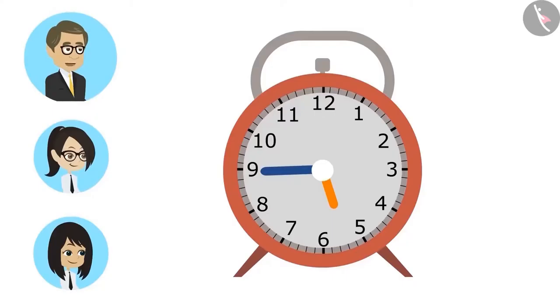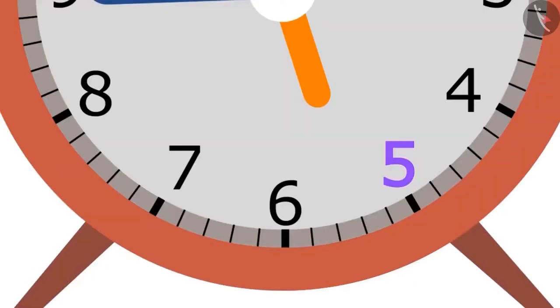Yes, sir. If the hour hand moves ahead of 5, but is behind 6, then it becomes certain that it is more than 5 and less than 6 o'clock.